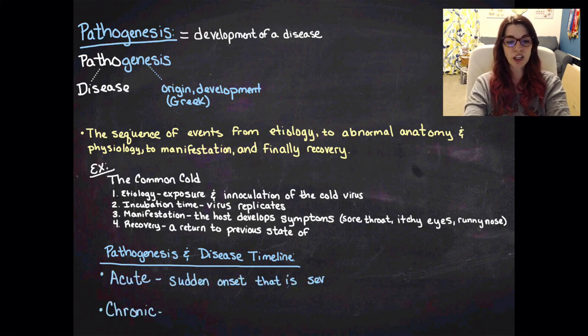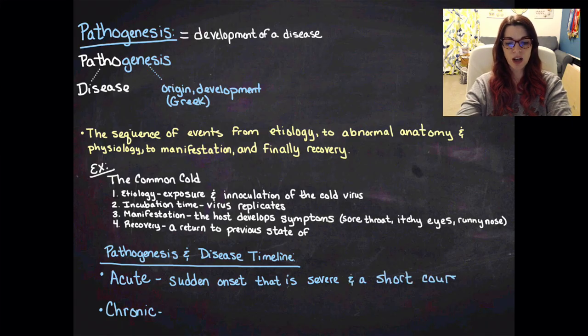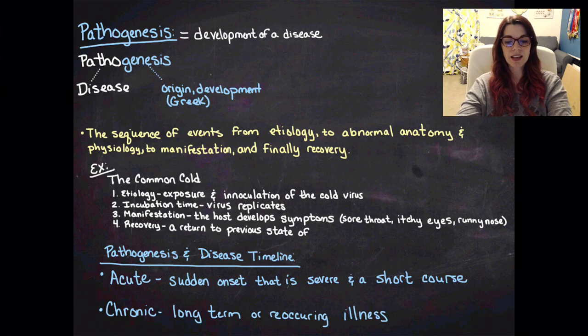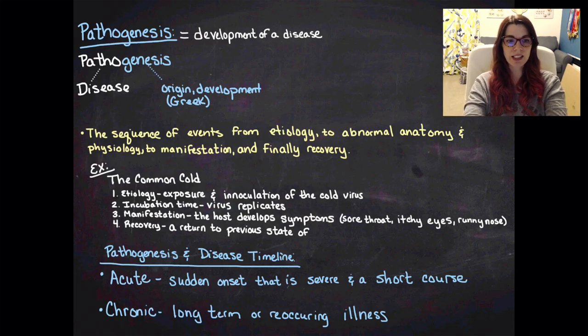You can either have an acute, which is going to be a sudden onset that's severe and it's a short course, or you can have chronic disease and that's going to be a long-term or a reoccurring illness. And so when you're talking about this pathogenesis and this whole process of the disease, you need to be thinking, is this an acute onset or chronic disease? And that's it for these notes. So I hope that's helpful.